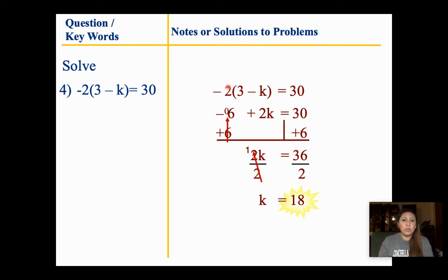Quick review: distribute — negative 2 times 3 gives me negative 6. Negative 2 times negative k — negative times negative gives a positive — so 2k. Then move everything like before: add 6 to both sides, get 2k equals 36, divide both sides by 2, and I get k equals 18.